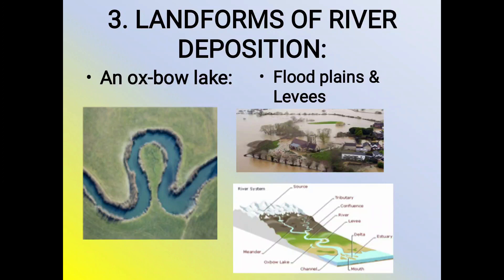Once these meanders develop, the river starts eroding the outer bank as its water is thrown against this bank. On the other hand, deposition of sediments is carried on the inner bank. The erosion of the outer side of the meander and deposition along the inner side tends to increase gradually. The meanders become more pronounced and the strip of land between the two adjacent loops becomes very narrow during a flood.